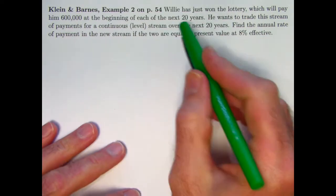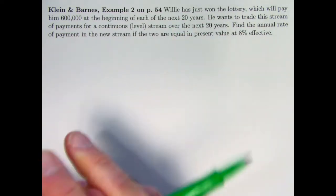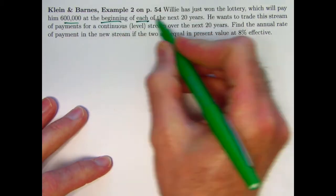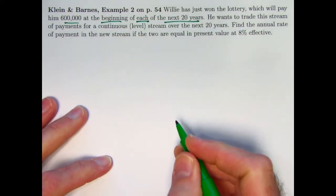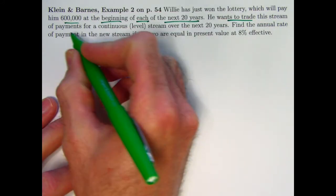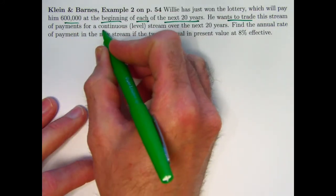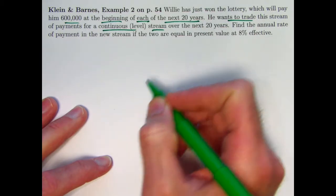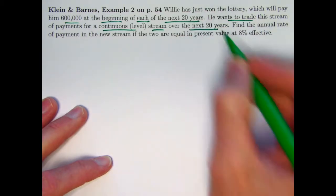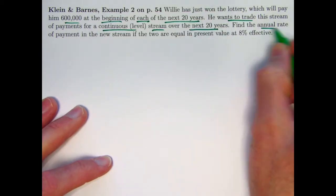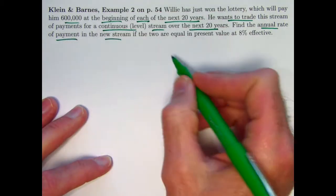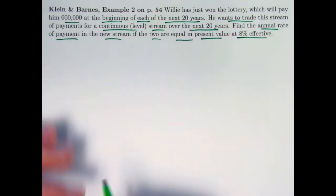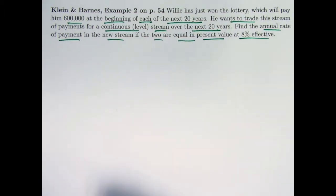Page 54 of that resource says Willie has just won the lottery, which will pay him $600,000 at the beginning of each of the next 20 years, so that's an annuity due. He wants to trade the stream of payments for a continuous stream. I added the word level in there; that's the assumption that it's a level continuous stream for the next 20 years. You want to find the annual rate of payment for that new continuous stream if these two things are equal in present value at 8% effective, an effective annual rate.